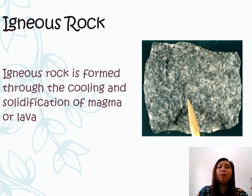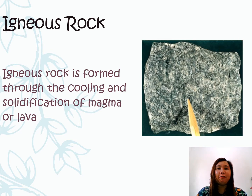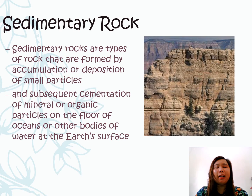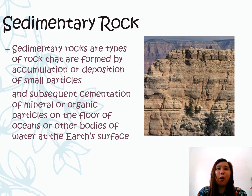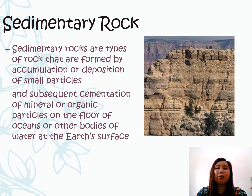Igneous rocks are those rocks that are formed through the cooling and solidification of magma and lava. While sedimentary rocks are types of rocks that are formed by accumulation or deposition of small particles or sedimentation, and subsequent cementation of mineral or organic particles on the floor of oceans or other bodies of water at the Earth's surface.